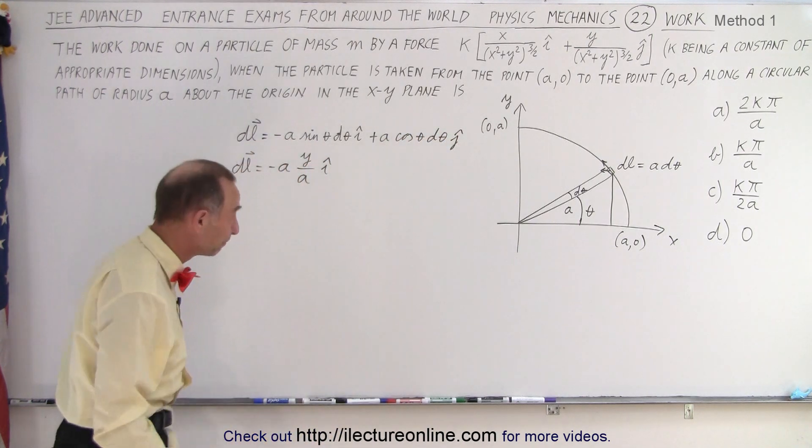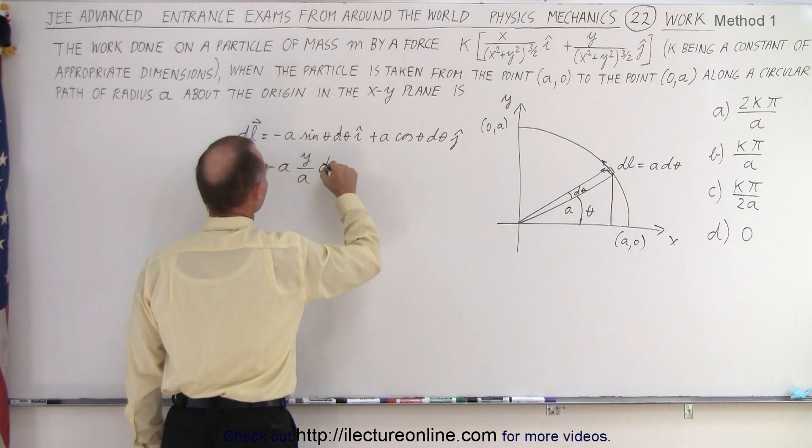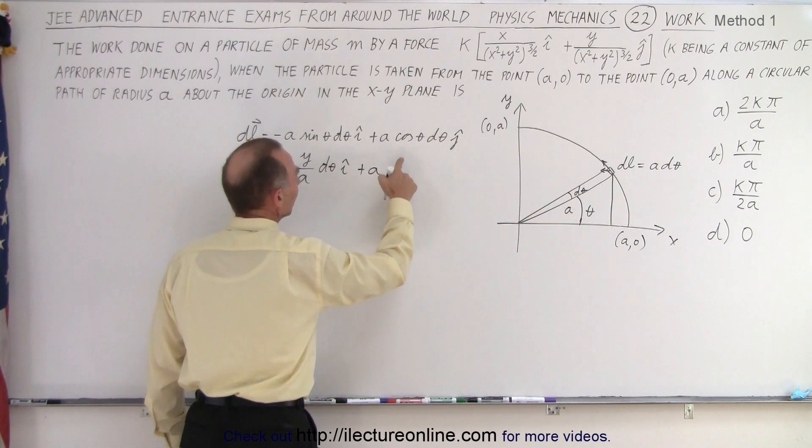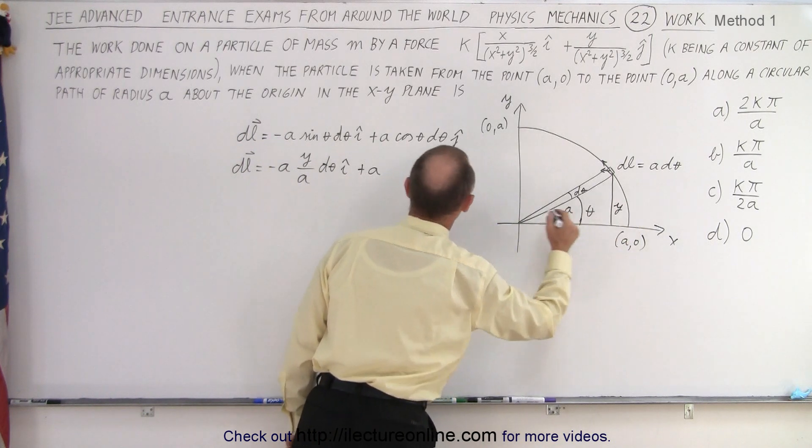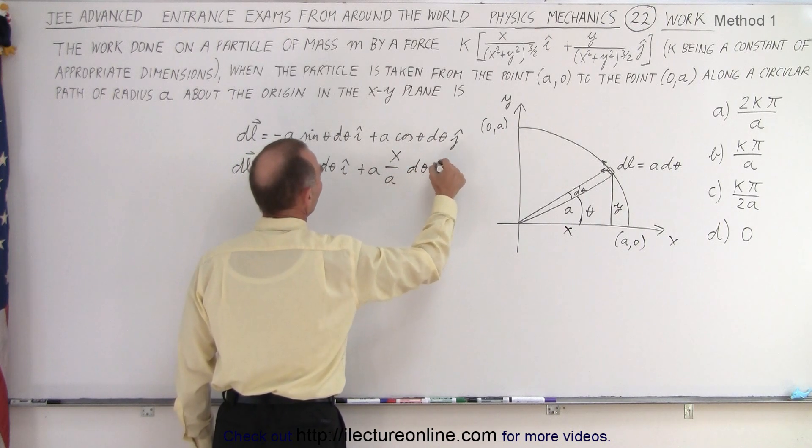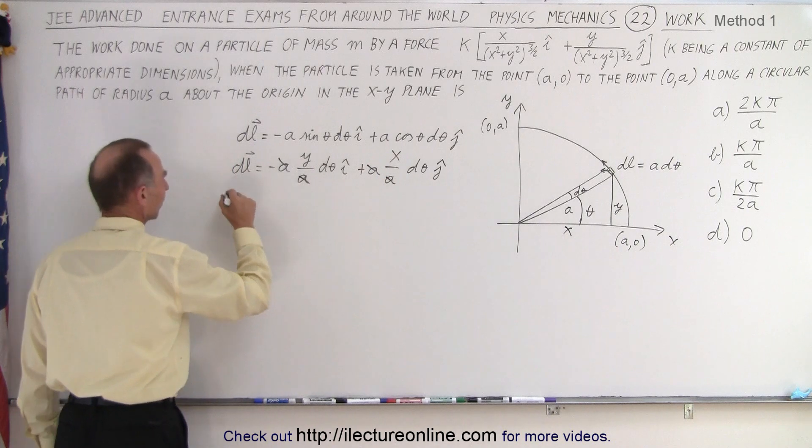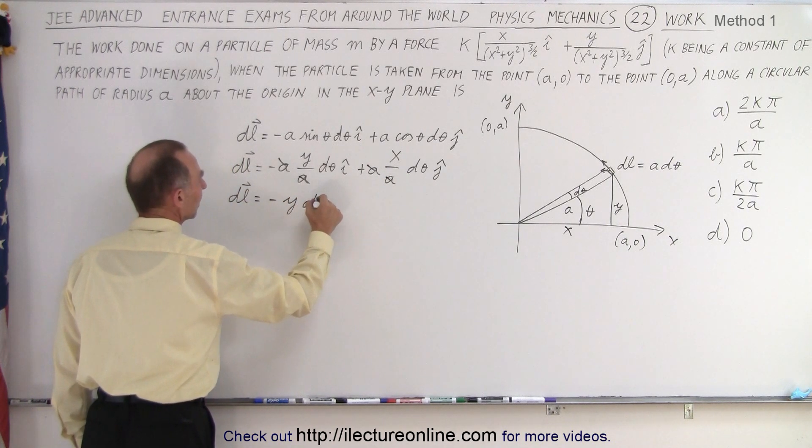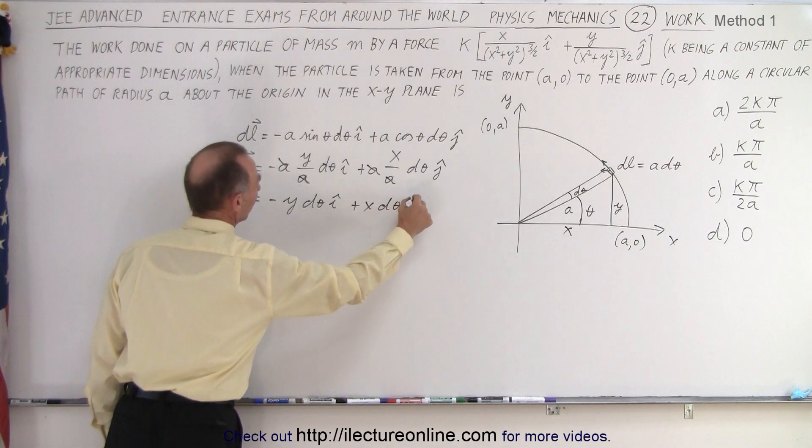All right, so now we have this. We still have our d theta in the I direction and then plus A times, the cosine of theta would be the adjacent side. That would be X over Y, so it would be X over A times d theta in the J direction. Notice the A's cancel out and we're left with DL is equal to minus Y d theta in the I direction plus X d theta in the J direction. Now,